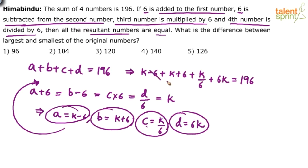Now solve for this. Minus 6 and plus 6 gets cancelled. So K plus K, 2K plus 6K, 8K, 8K plus K by 6. So 8K plus K by 6 is what? 48, 49K.